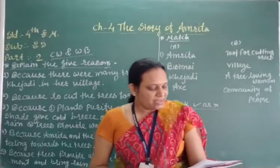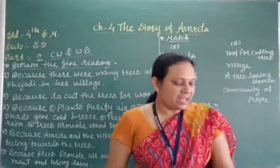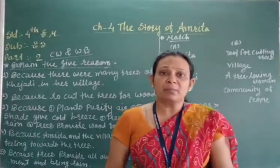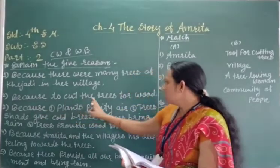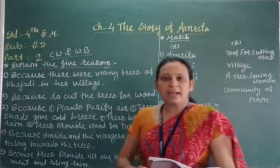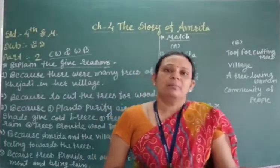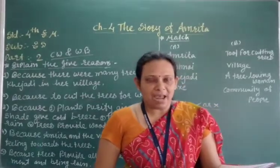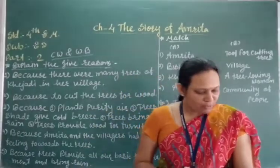Now second number: Why did the stranger come to Amrita's village one day? Because the king had ordered to bring wood to make the palace, so the stranger came to cut the trees for wood.